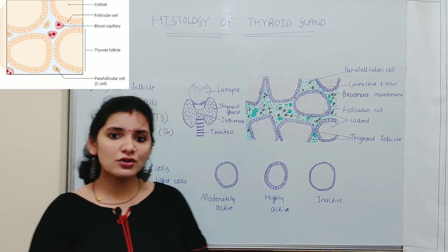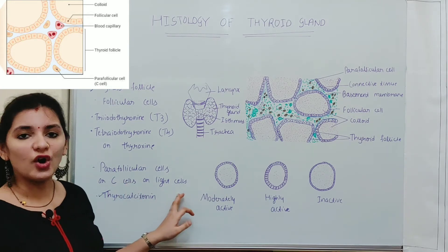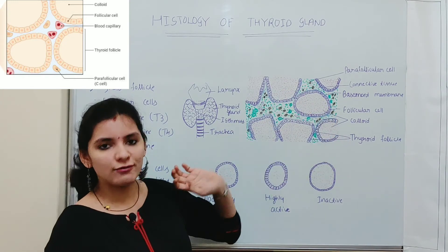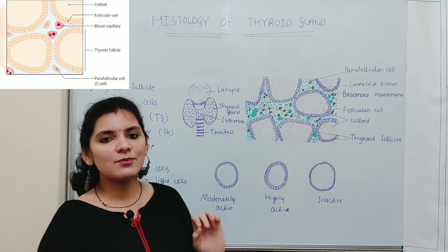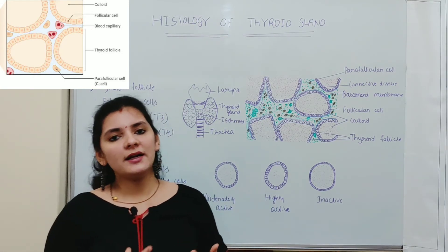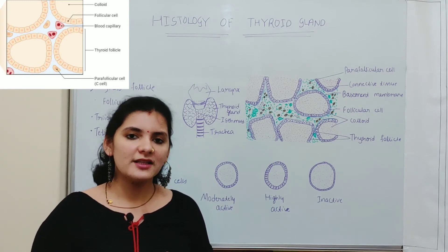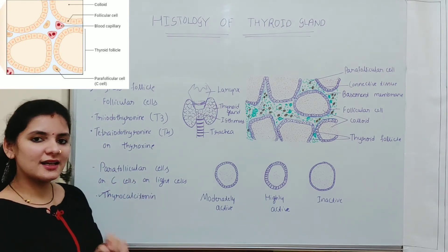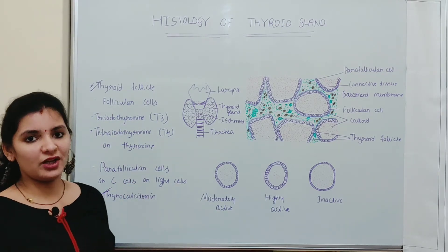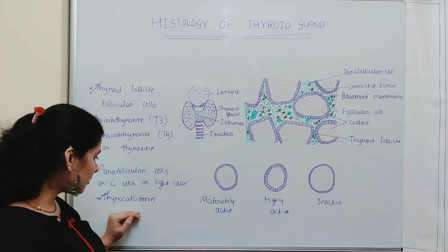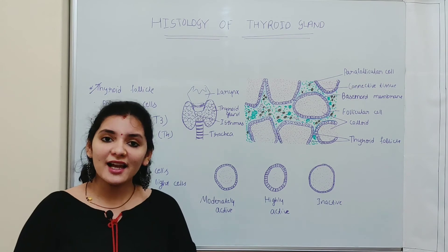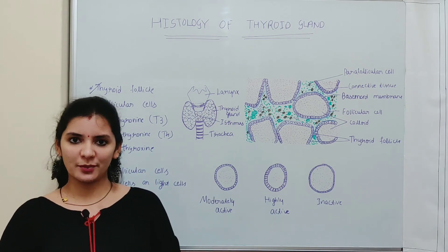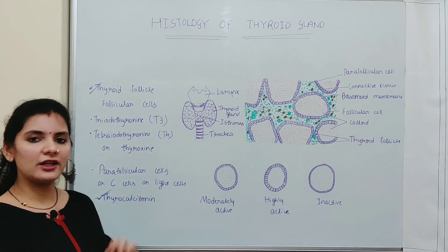Parafollicular cells are also known as C cells, clear cells, or light cells. Comparatively, they are larger than the follicular cells, with an eccentrically positioned nucleus, and they also contain an abundant amount of Golgi complex, microfilaments, microtubules, and mitochondria. The function of the parafollicular cells is the production of thyrocalcitonin or calcitonin, which lowers the calcium level in the blood when it is high by suppressing the release of calcium from bone.